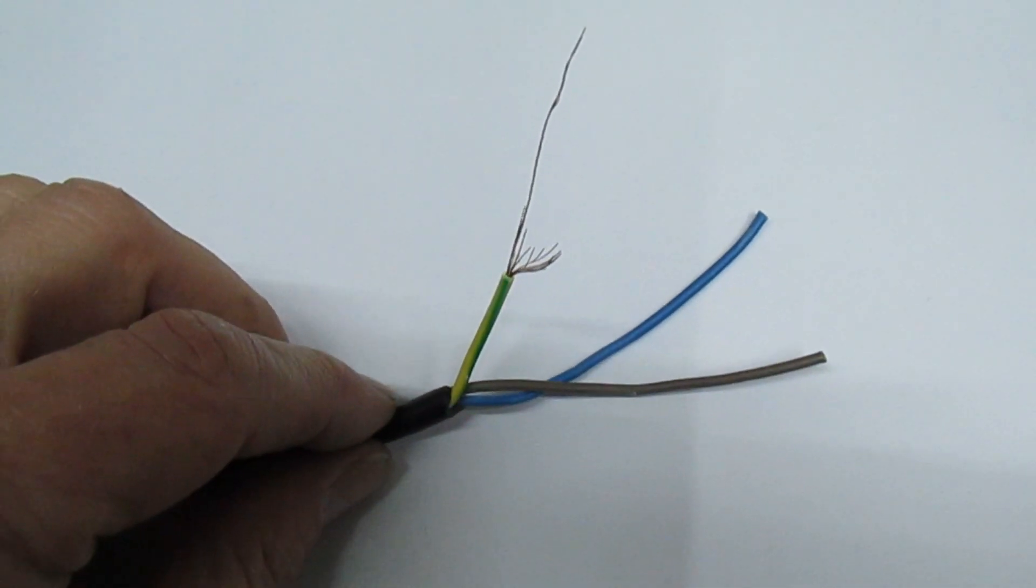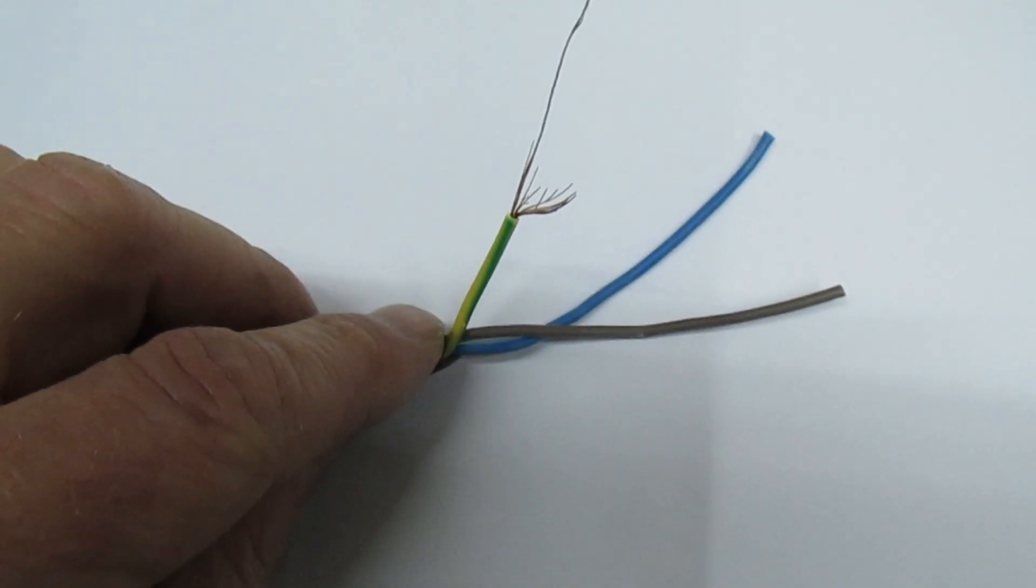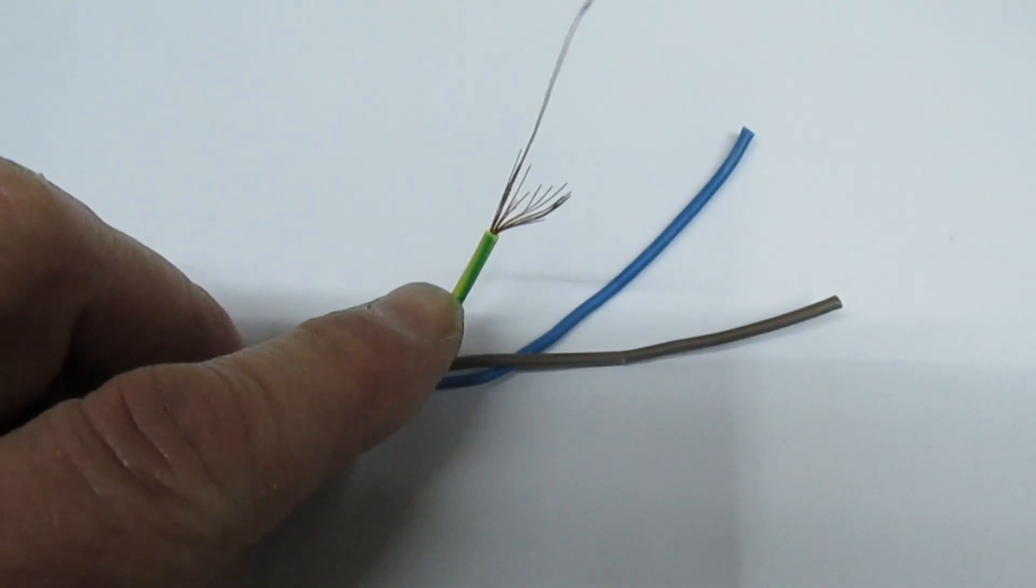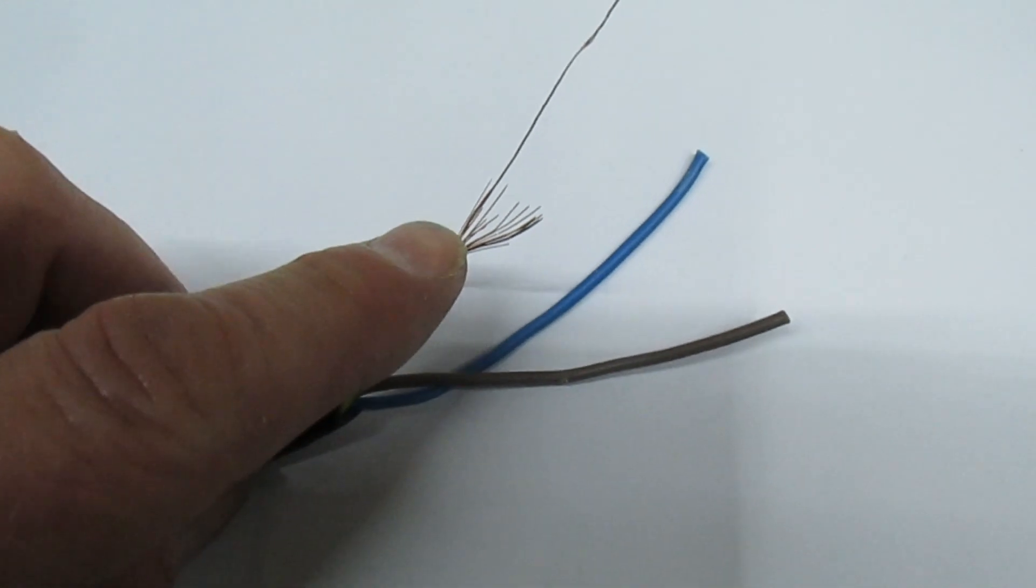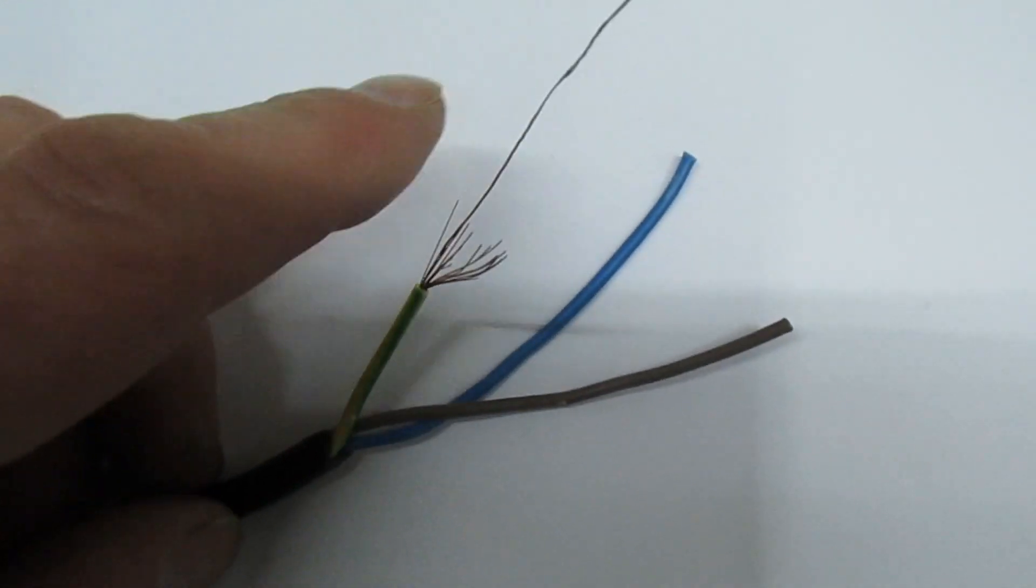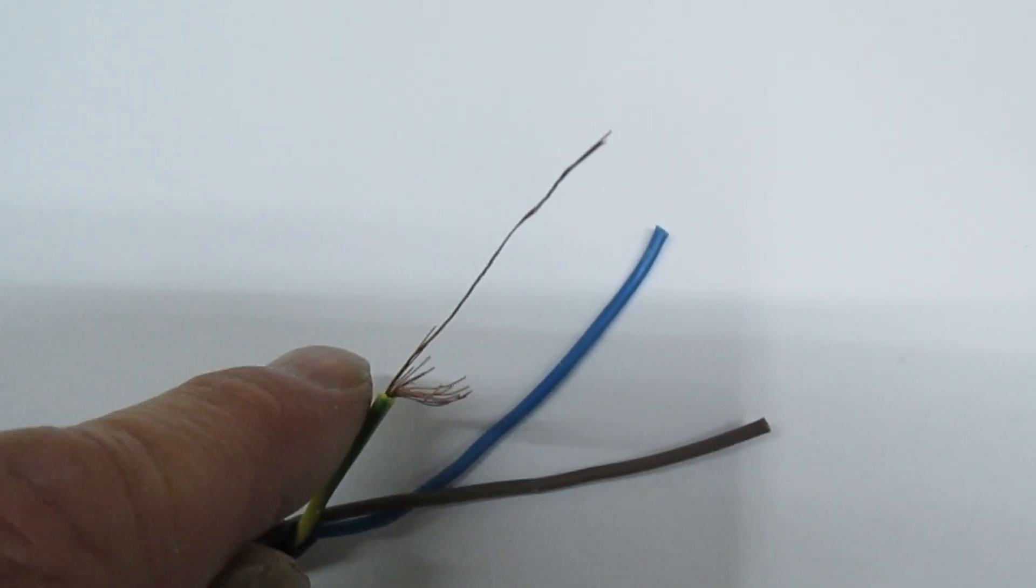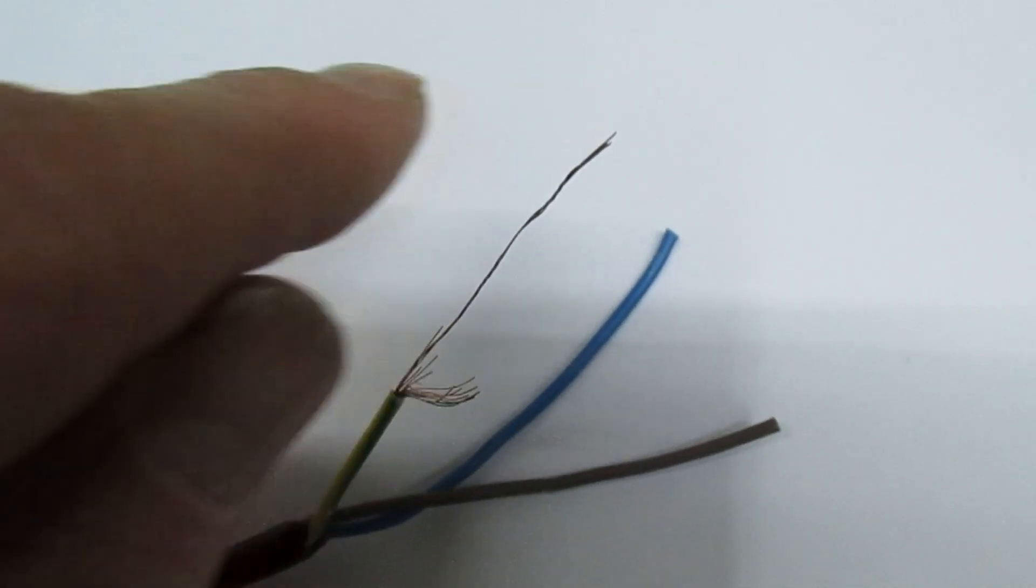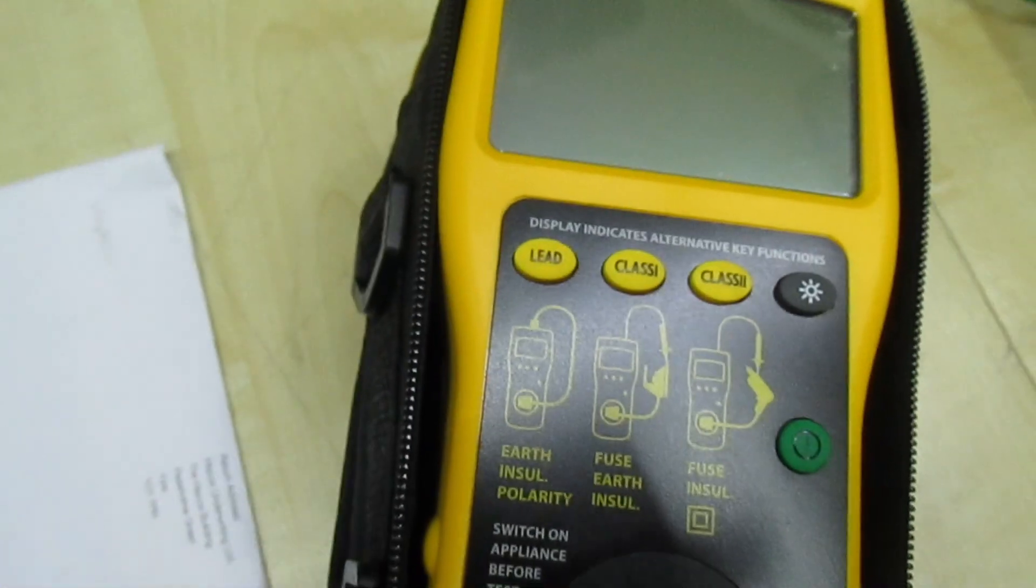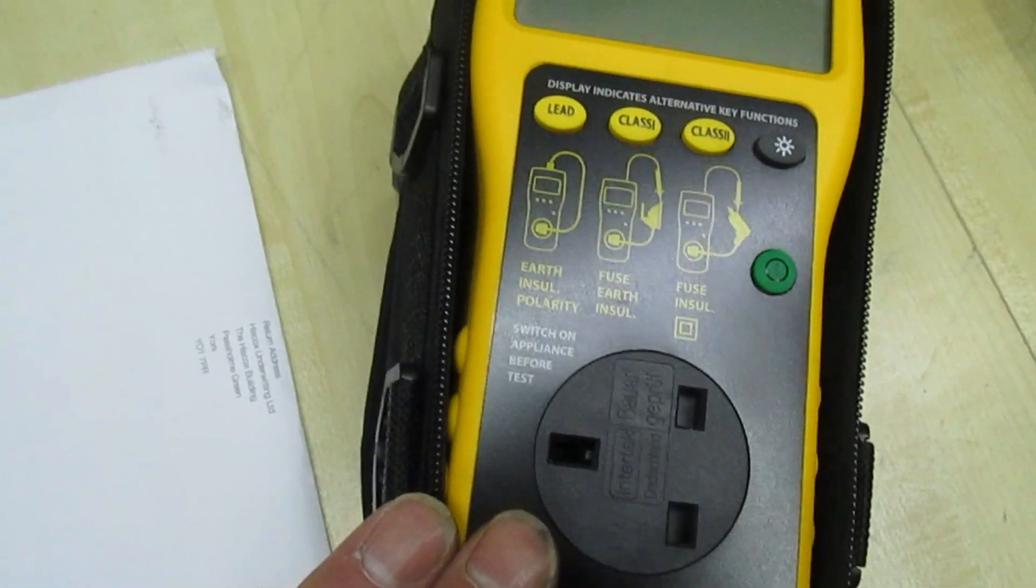Right so supposing in this situation that we've got a metal class one earth appliance and the earth wire has actually become frayed. Now here I've deliberately frayed it. Now any short between live flowing through the earth, there is a danger that this connection if it's frayed could blow open and that is the shortcoming of these portable appliance testers because it's only battery operated.